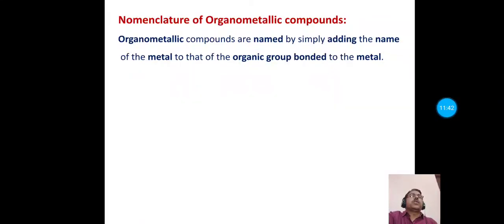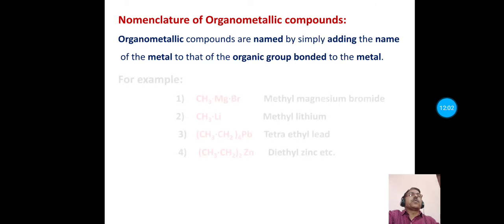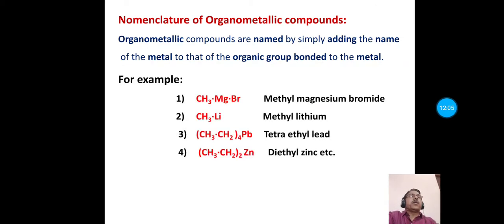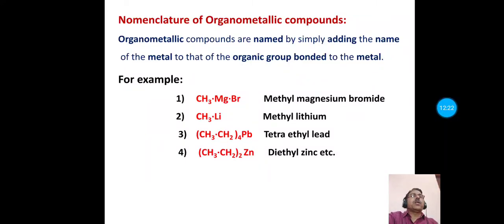Next is the nomenclature of organometallic compounds. Organometallic compounds are named simply by adding the name of the metal to the name of the organic group bonded to the metal. For example: methyl magnesium bromide, methyl lithium, tetraethyl lead, or diethyl zinc.